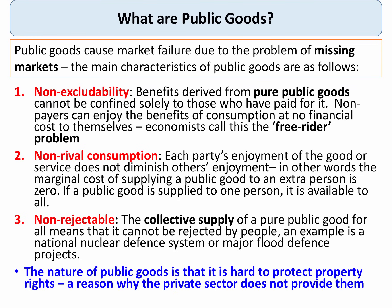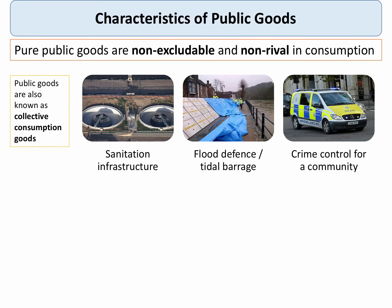The key problem with public goods is it's extremely hard to protect property rights and use those to make a profit, and this is an important reason why the private sector does not provide public goods. The two most important characteristics are probably that they're non-excludable and non-rival.